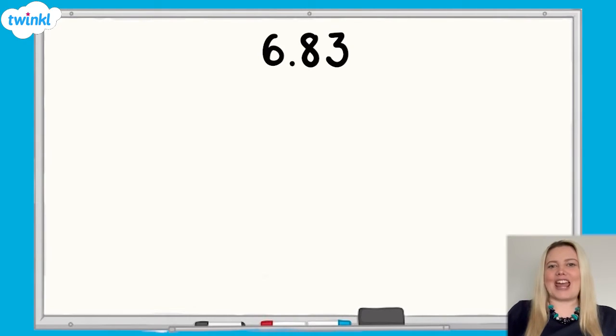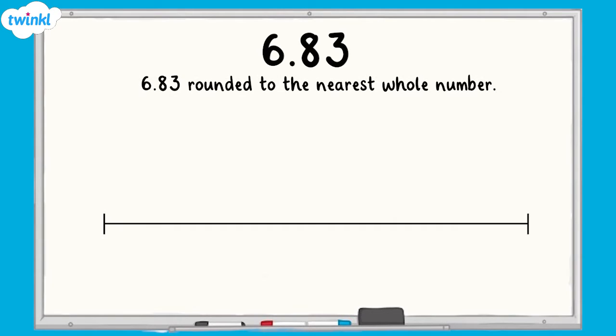Let's have a go at rounding 6.83 to the nearest whole number. When we round any number, we can use a number line to help. First, we need to identify the previous and next whole numbers and place them on the number line.